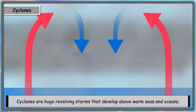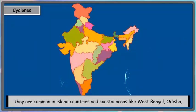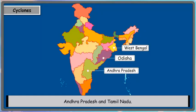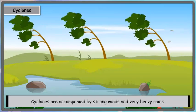Cyclones are huge revolving storms that develop above warm seas and oceans. They are common in island countries and coastal areas like West Bengal, Odisha, Andhra Pradesh, and Tamil Nadu. Cyclones are accompanied by strong winds and very heavy rains.